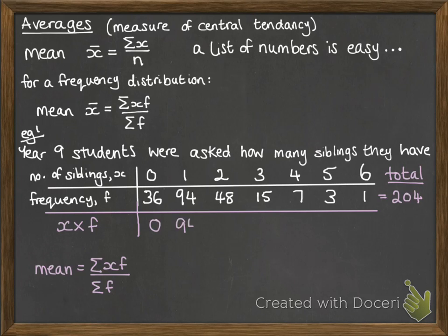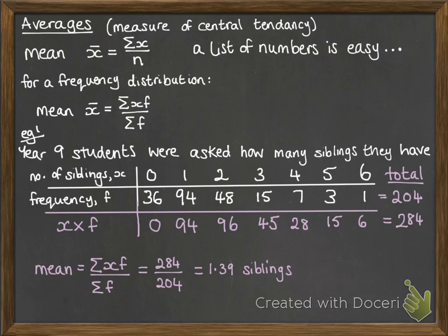What's happening on that line - we're doing 0 times 36, 1 times 94, 2 times 48, and so on, because 36 people said they had 0 siblings - imagine that's 36 zeros lined up in a row, followed by 94 people that said 1, so 94 ones in a row, and so on. You're adding up that total - all those zeros, the ones, the twos, the threes - we get a total of 284. Then we do 284 divided by the number of people we asked, 204, which gives our answer of 1.39 siblings.